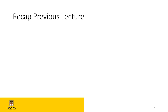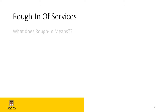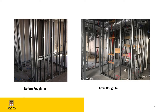Last lecture we covered the roughing-in services — we talked about all the services from hydraulic to electrical to fire and mechanical. We talked about the type of windows and doors and what's the use of them. Roughing-in happens after the wall framing is completed and prior to closing all the walls and ceilings, so all the services — cables, pipes, ducting, hosing — everything that goes in the walls, ceiling, and slab prior to closing it off with gyprock, concrete, or anything. We showed photos of before and after roughing-in.